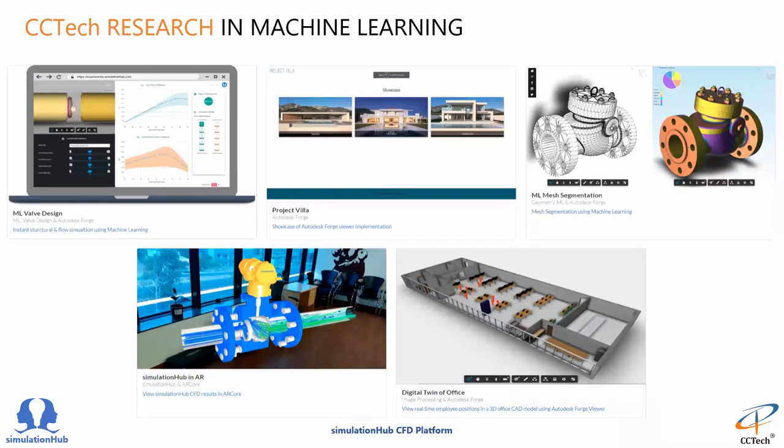Let me now take a minute to talk on other AI projects that we do under the banner of CCTech research. One interesting project is finding out high level CAD information from a very basic triangulated mesh geometry. In the current version if you upload an STL file of a valve geometry, in a few moments we are able to separate all surfaces based on its surface type like planar surface, cylindrical surface, spherical and so on. That is also available online for you to try out. We will be sharing the links later in the slides.